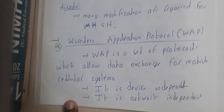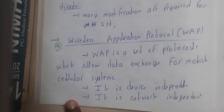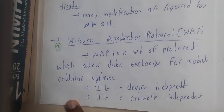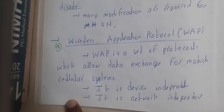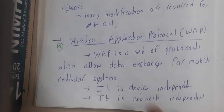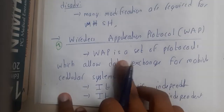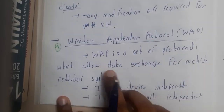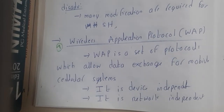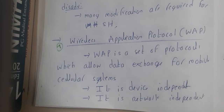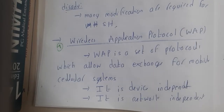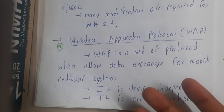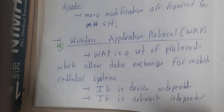Hello, we are back with our next lecture. In this lecture, let us go through the concept of Wireless Application Protocol, that is WAP. WAP is a set of protocols which allow data exchange for mobile cellular devices. Basically, we check websites and all those things on our mobiles, and that is possible because of WAP.